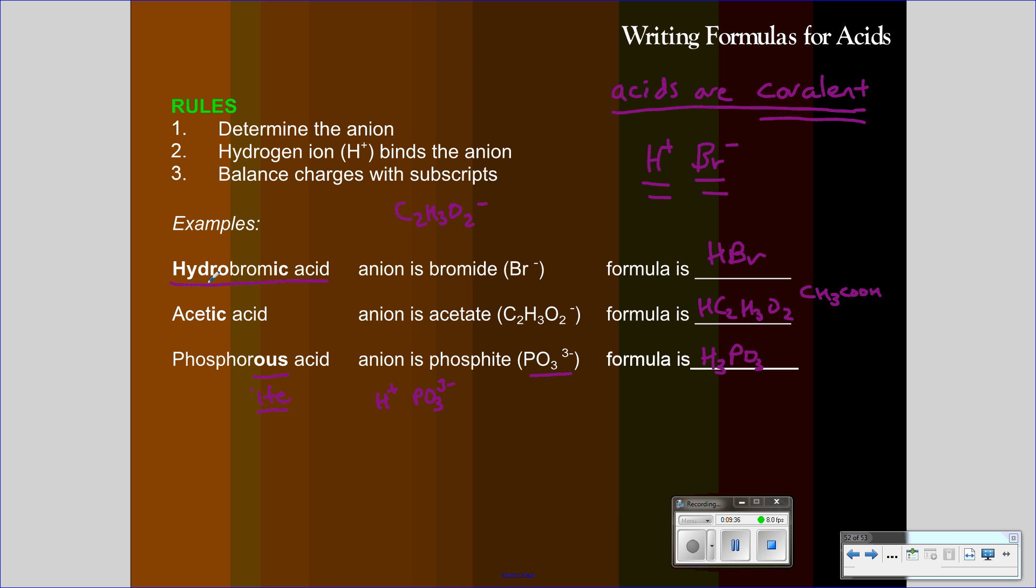So, to review, for binary acids, you're simply going to bind hydrogen to the anion from the root word, brom, and for ternary and oxoacids, you're going to find the root from that suffix. Ic becomes ate, so that's acetate. OUS becomes ite, so that's phosphite, and that's going to be your anion bound to hydrogen. Again, with all acids, they begin with that hydrogen ion, and then they're bound to some anion, either a monovalent nonmetal ion, or a polyatomic anion, based on that suffix.